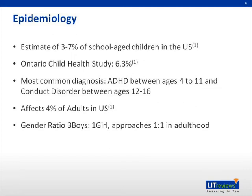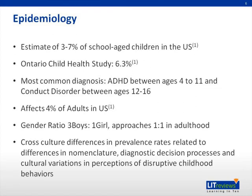Gender ratio: it affects 3 boys to 1 girl and approaches a 1-to-1 ratio in adulthood. Cross-cultural differences in the prevalence rate, related to differences in normal culture, diagnostic decision processes, and cultural variation in perception of disruptive childhood behavior, may account for the difference in prevalence.